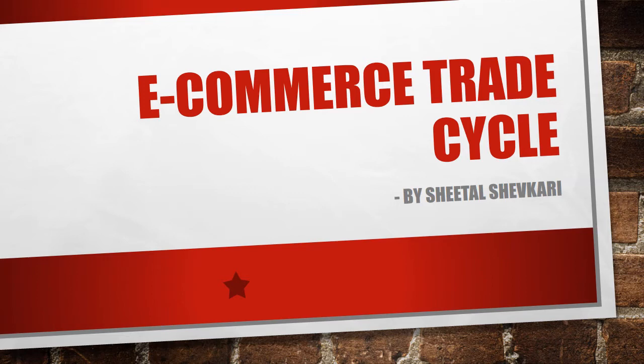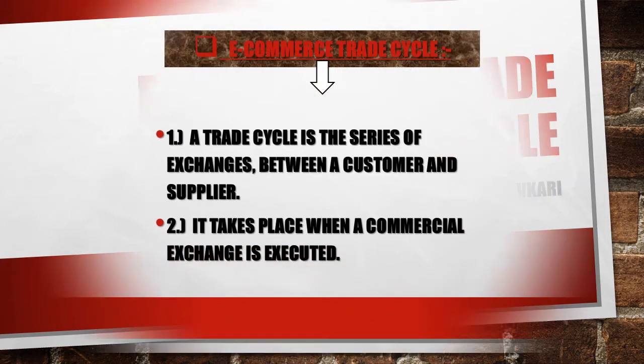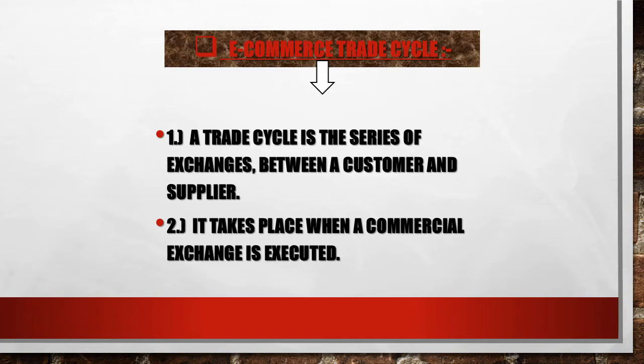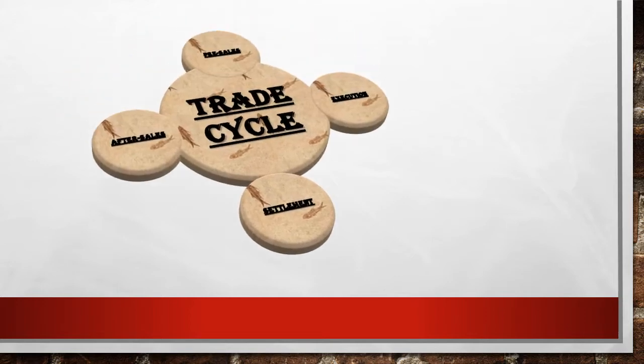Now we'll look at the trade cycle and the different phases which come under the e-commerce trade cycle. The e-commerce trade cycle is a series of exchanges between a customer and a supplier. It takes place when a commercial exchange is executed — that is, whenever there is an exchange of commercial goods or services, a trade cycle is seen. In short, it is a series of exchanges between a customer and supplier executed whenever a commercial exchange of goods or services takes place.